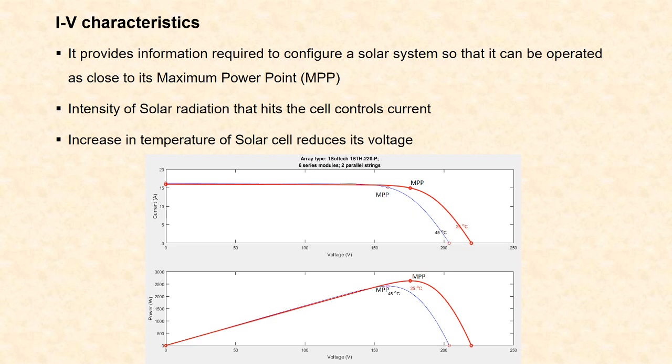The current is controlled by the intensity of solar radiation and voltage is controlled by the temperature. As the temperature increases, the voltage decreases. That is, voltage is inversely proportional to temperature and current is directly proportional to intensity of solar radiation.